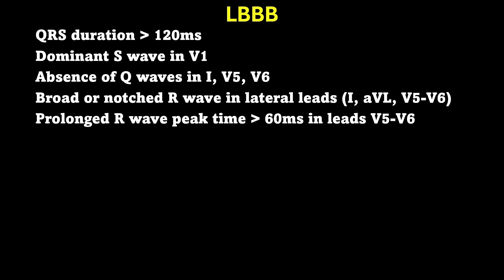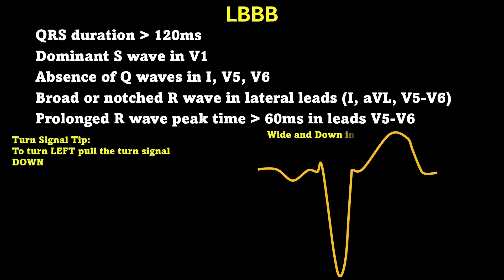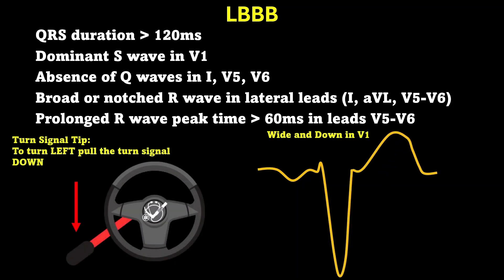So the septal activation is actually reversed in a left bundle branch block, which eliminates the lateral Q waves that we normally see. You're also going to have a broader notched R wave in the lateral leads I, AVL, V5, V6, and a prolonged R wave peak time greater than 60 milliseconds in leads V5 and V6. But to keep it simple: look in V1 — if the QRS is wide and facing down, that's your golden boy. That's your turn signal tip to turn left — wide and down in V1 means left bundle branch block.